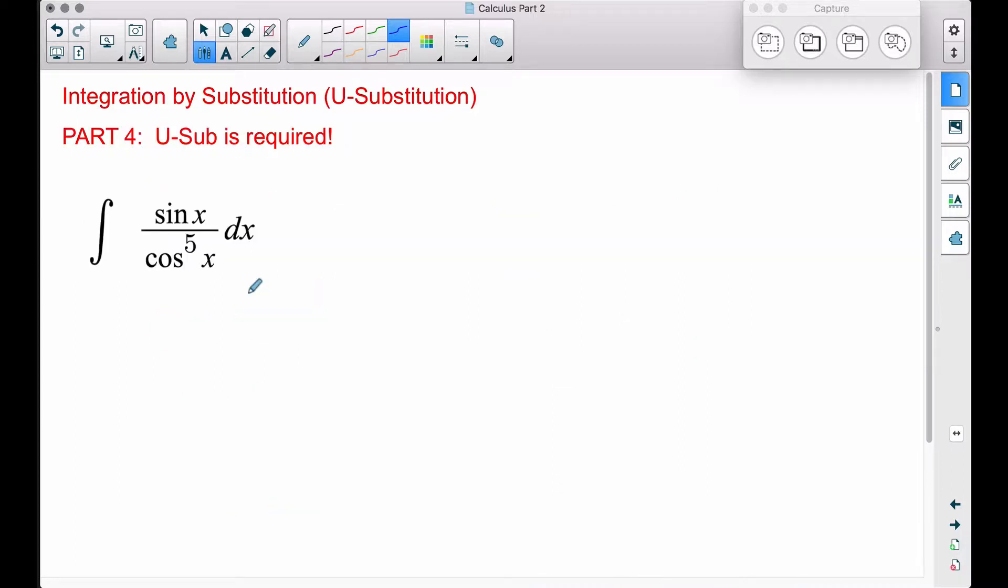And here in part 4, a classic type of U-sub problem that you'll first be introduced to is where you have a combination of a sine with some cosines or vice versa. Now, don't ever forget this. The derivative of sine is cosine, and the derivative of cosine is negative sine.